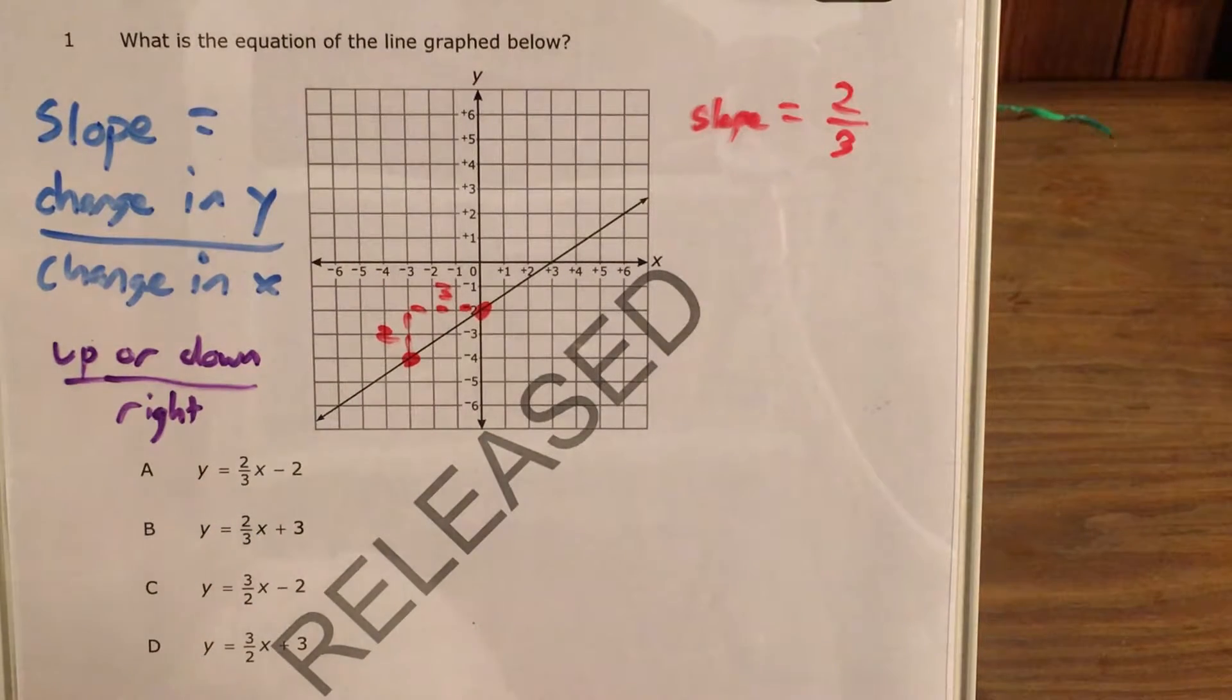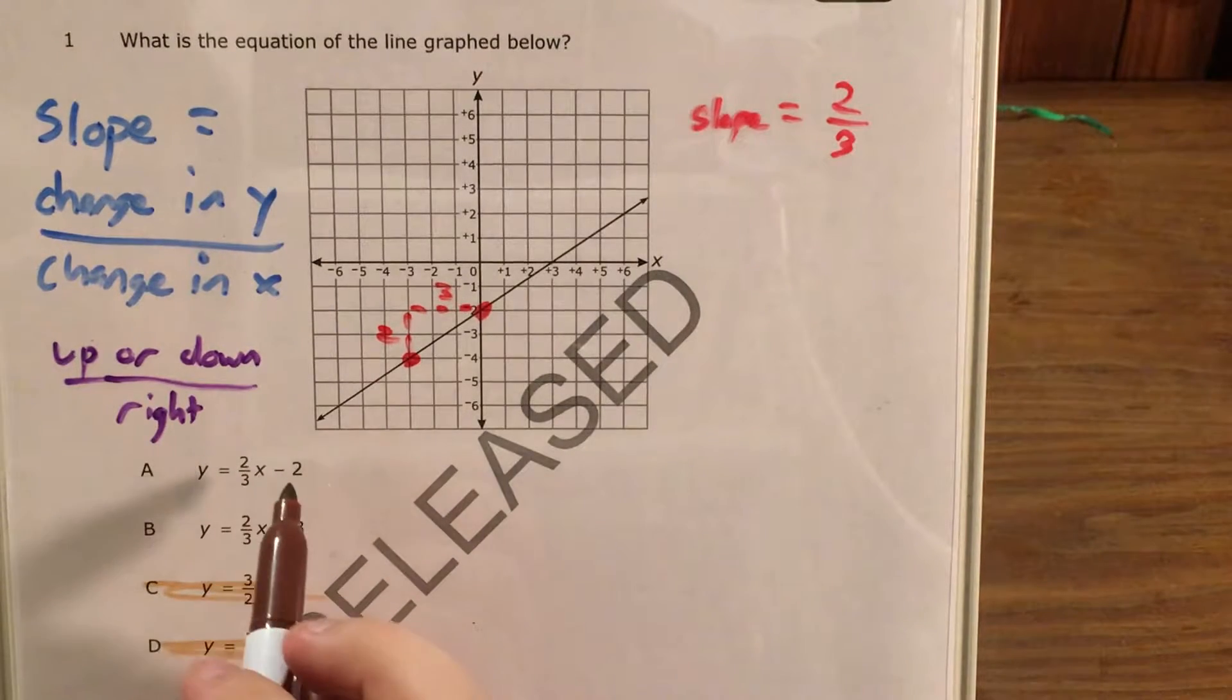Now at this point, now that I found my slope, I can go ahead and eliminate choice C and choice D. I know those aren't my answers because they say that my slope is three-halves. And when I actually write one of these equations, my slope is going to go right here next to my variable.